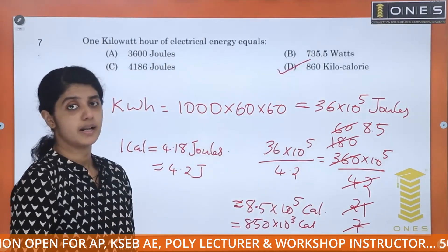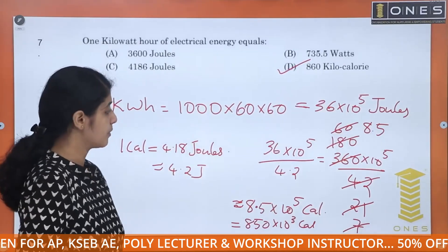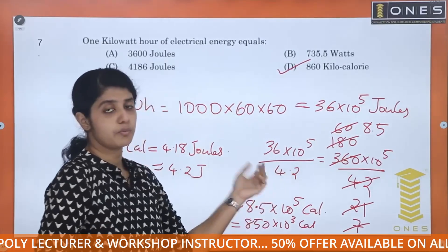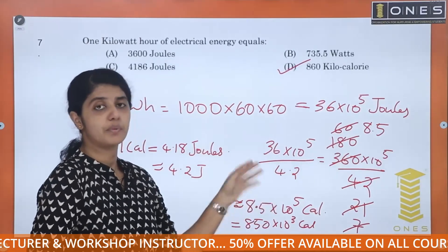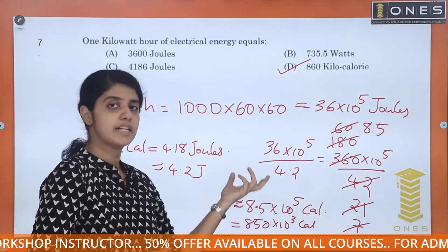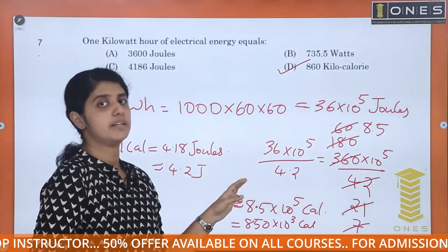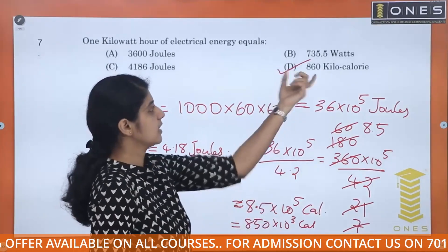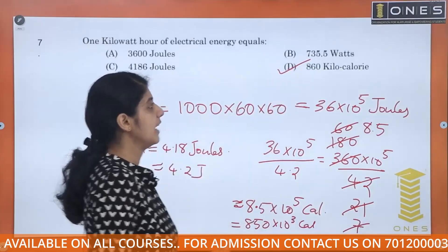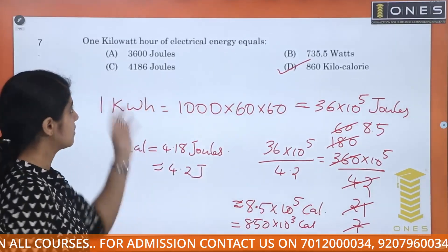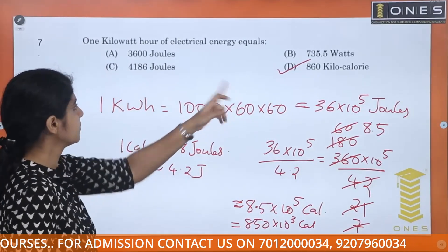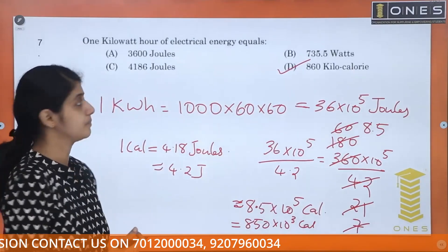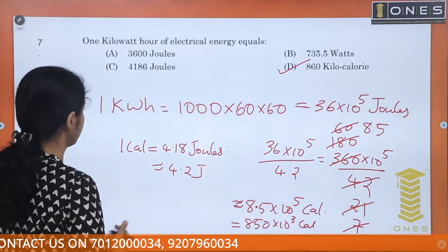Using the denominator 4.18, which approximates to 4.2, the actual answer is 860 kilocalories. So 1 kWh of electrical energy equals 860 kcal. The answer is 860 kilocalorie.